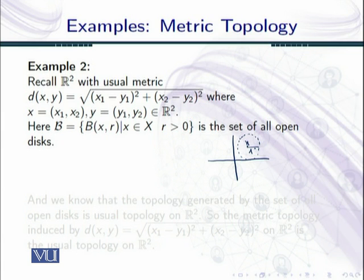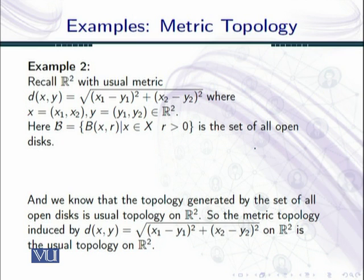Now recall the basis of the usual topology on ℝ² is the set of all open disks in ℝ². So the metric topology induced by this metric on ℝ² is the usual topology on ℝ².